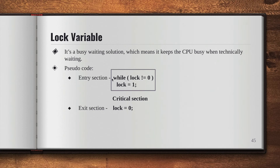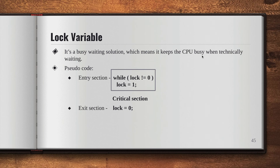This loop continues executing continuously — that is why it is called a busy waiting solution, because it keeps the CPU busy while waiting. P2 continuously checks inside the while loop because the lock value remains one while the first process P1 is being executed.